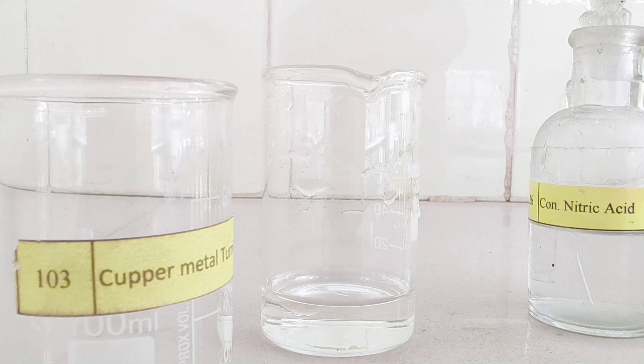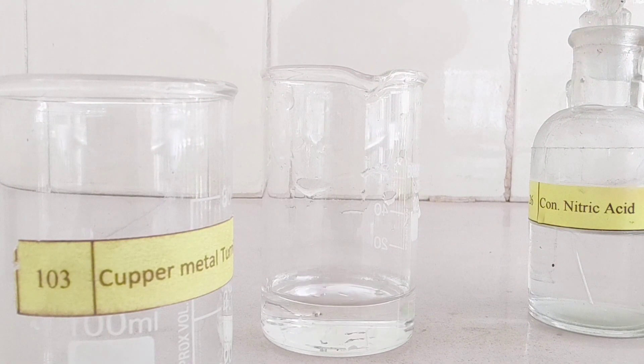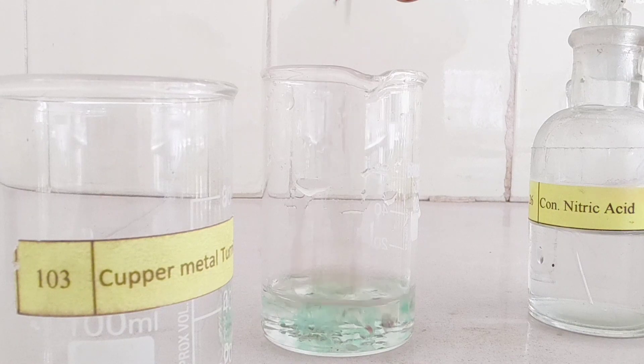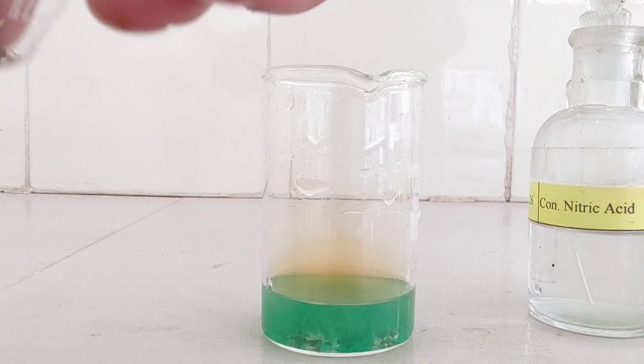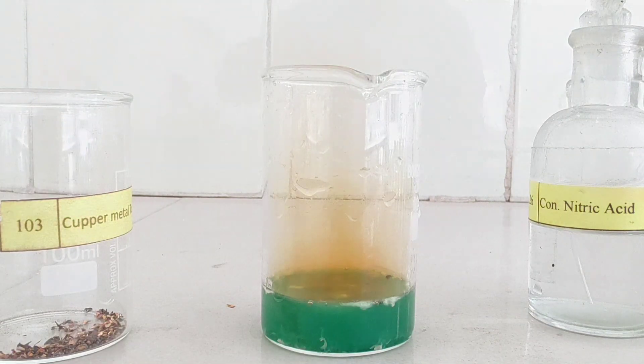And now we are finally going to start this reaction. Copper is oxidized by concentrated nitric acid, HNO3, to produce Cu2+ ions. The nitric acid is reduced to nitrogen dioxide, a poisonous brown gas with an irritating odor.